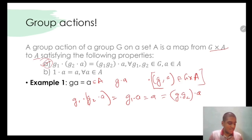What about the second condition? We define that GA is equal to A for every A belongs to A. Therefore, one belongs to G and A belongs to A. The second condition is also easily satisfied.